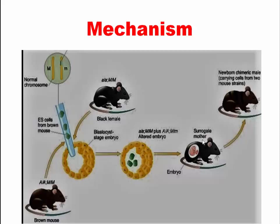When this surrogate mother gives birth to the new mouse, the new mouse will have both two types of colors. Here is the Chimeric Mouse, and this mouse has two colors — brown and black. Both of the two colors are found in this Chimeric Mouse.